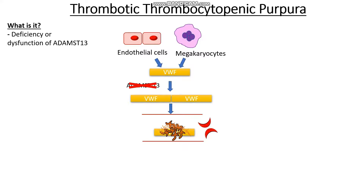These clots and fibrin sheaths tend to get deposited in small blood vessels, and because the red cells are being broken down we can see a degree of haemolysis. We can therefore classify thrombotic thrombocytopenic purpura as a type of microangiopathic haemolytic anaemia — microangiopathic referring to the fact that it affects small blood vessels, haemolytic referring to the splitting up of red blood cells, and anaemia referring to the reduced red cells in our blood.